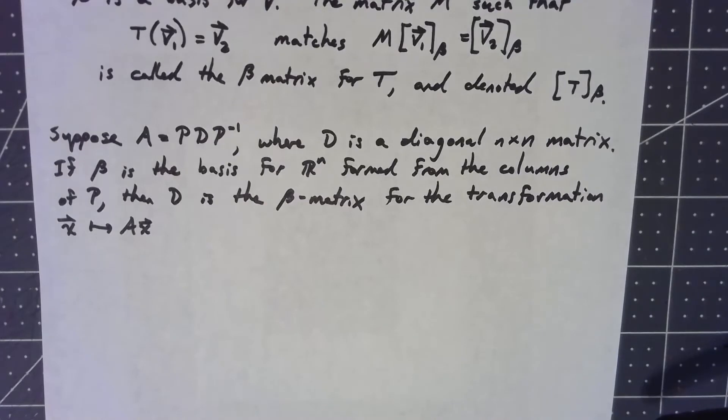Now, if we think about it, always the columns of P have to form a basis of some kind, because we know the columns have to be linearly independent for it to be an invertible matrix, and because there's n columns and linearly independent vectors have to form a basis for R^n.